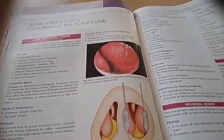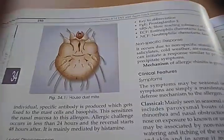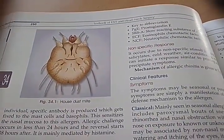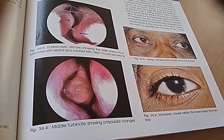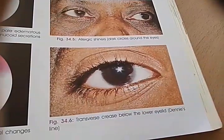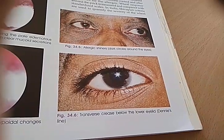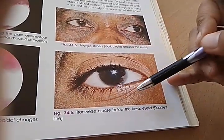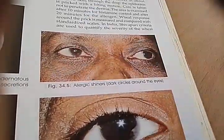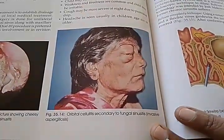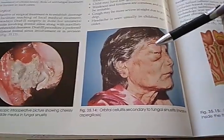How are you finding the book, guys? It looks a little neat the way it's printed. This is a house dust mite — the chapter is allergic rhinitis. Middle turbinate showing polypoid changes. And this one is a transverse crease below the lower eyelid — Dennie's line. Allergic shiners are dark circles around the eyes. Then orbital cellulitis secondary to fungal sinusitis — this person has orbital cellulitis secondary to fungal sinusitis.